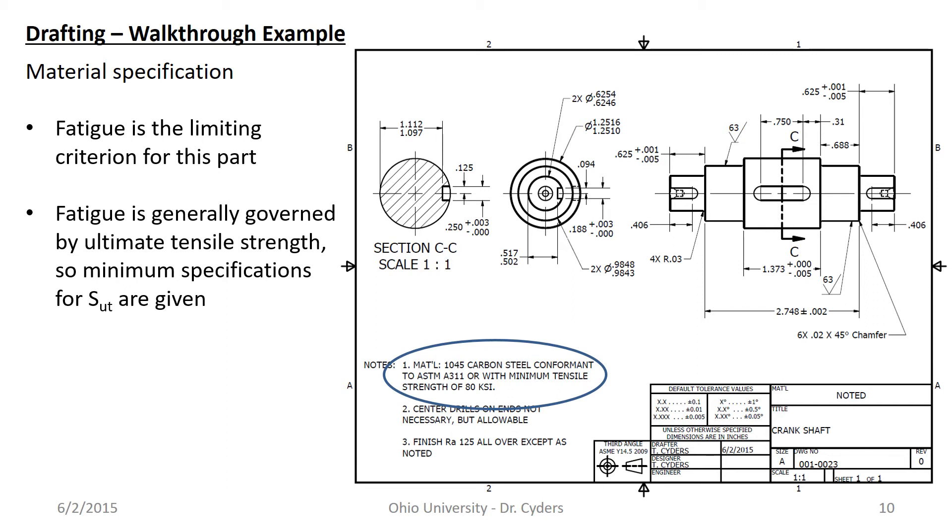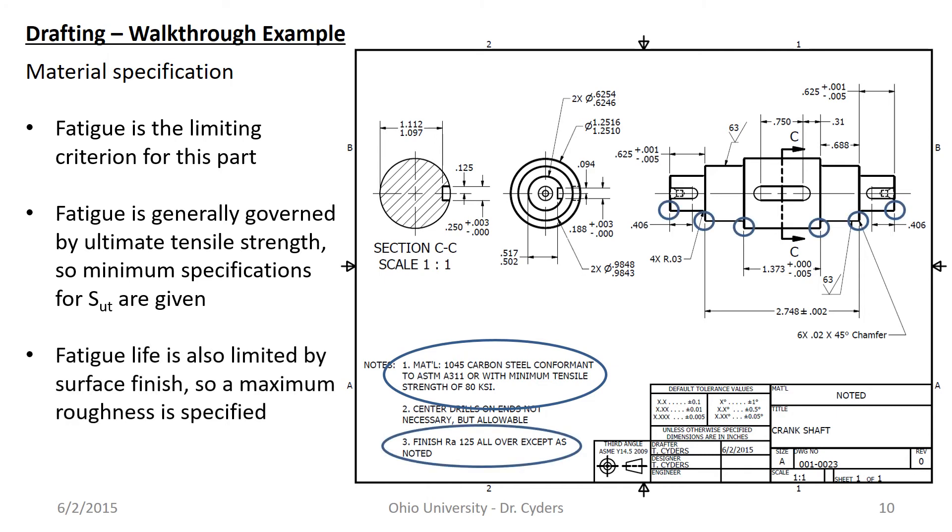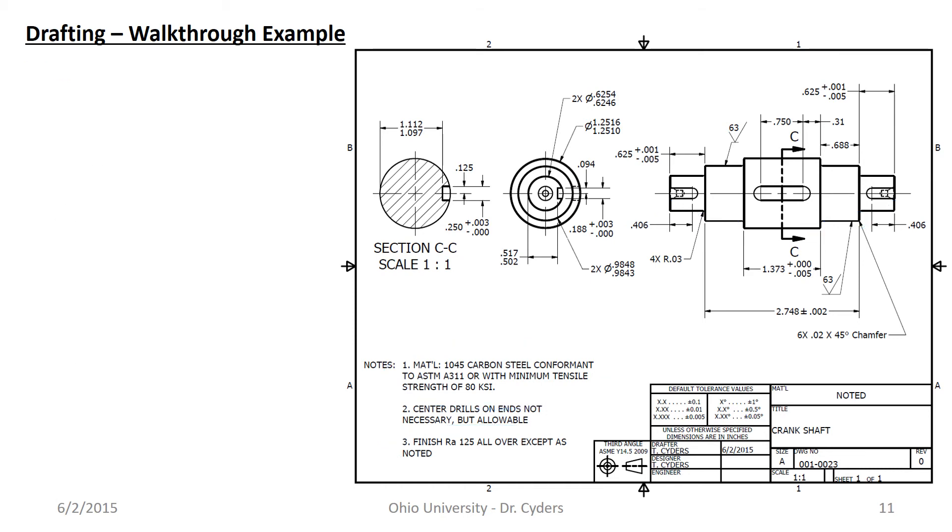And I can rely on a pretty decent assumption of fatigue strength based on that ultimate tensile strength or I can simply specify that it's 1045 carbon steel with 80 ksi minimum ultimate tensile strength which they can get from a mill test report. Fatigue life is also limited by surface finish so maximum roughness is specified. So I've specified a finish of RA 125 all over except as noted and so here on this surface and here on this surface I have denoted that I need an RA 63. Otherwise I know that I'm going to have at least an RA 125 which is not terribly smooth but it's not terribly rough.